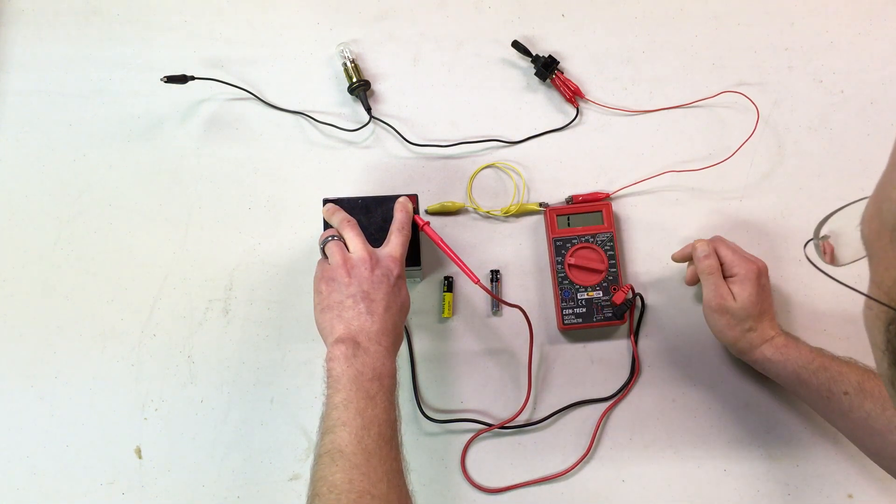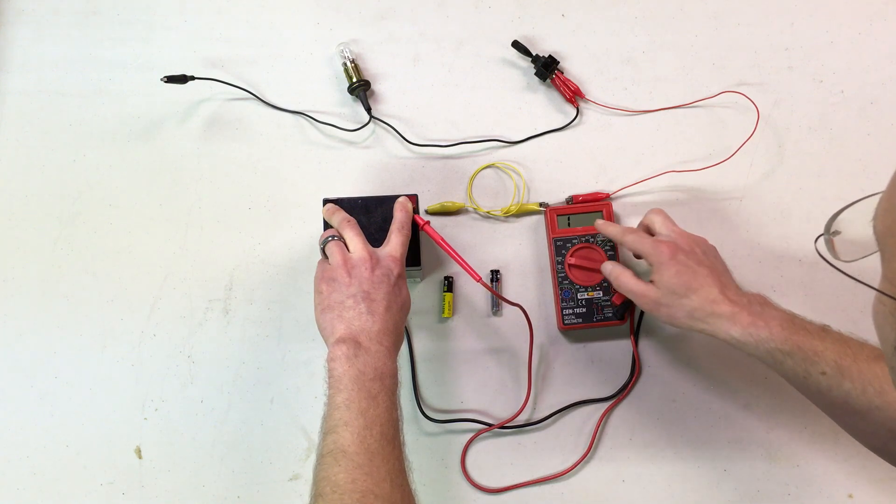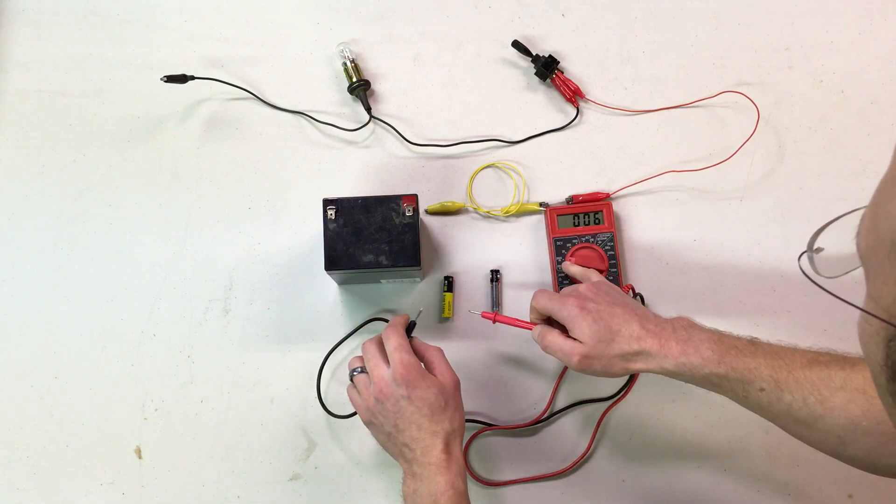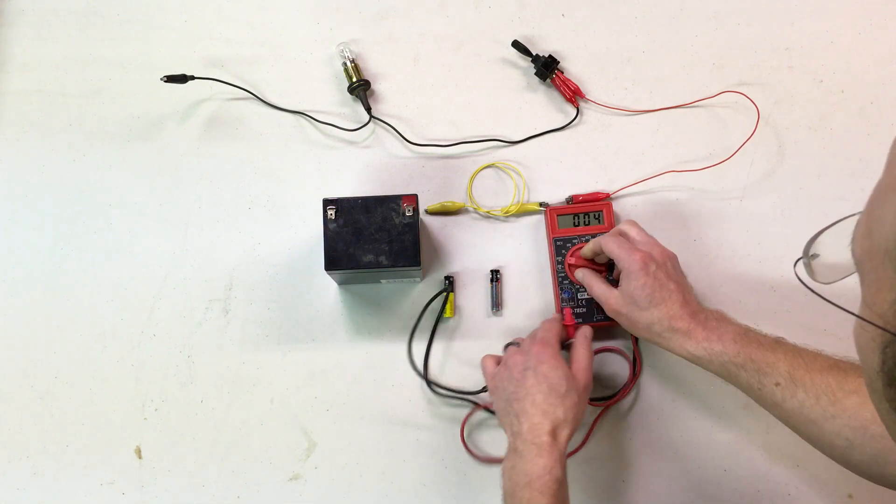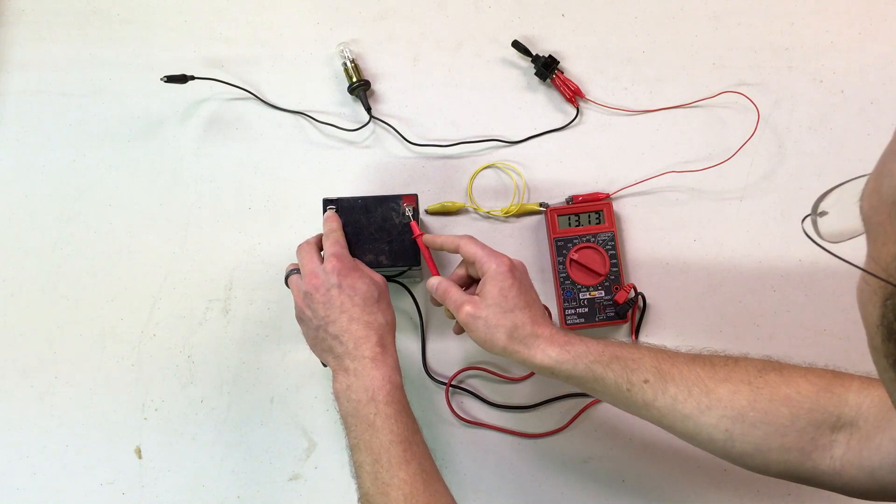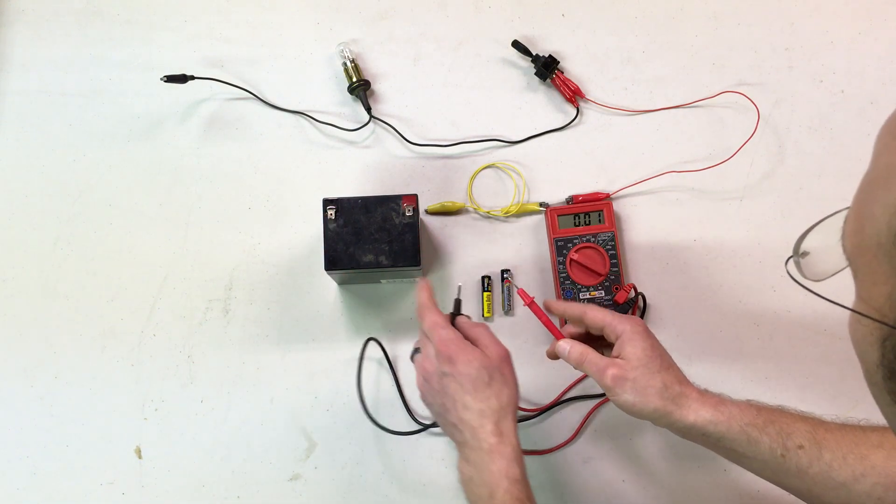If you go under that, it's going to say overload because there is a higher voltage that you're trying to measure than what it can represent using that setting. So it lets you know that you need to turn it up a notch or two.